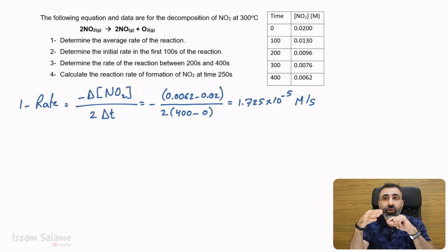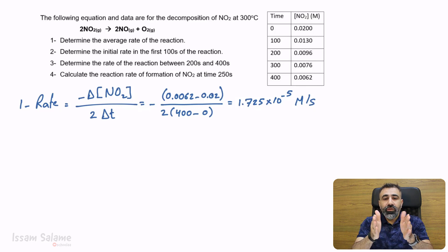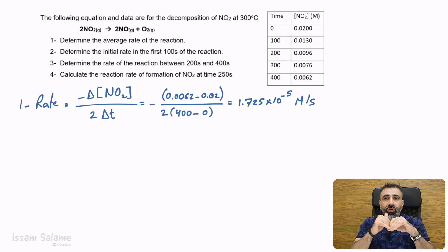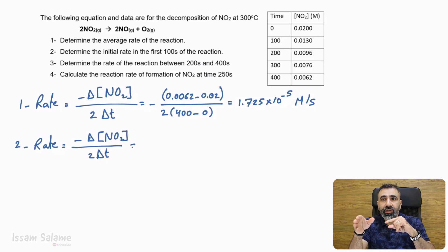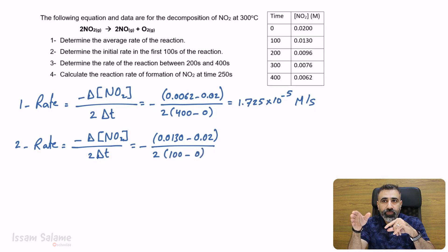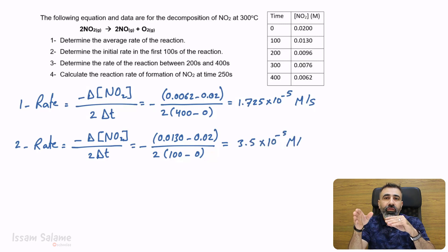For the second part, determine the initial rate in the first 100 seconds of the reaction. This means we need the final concentration at time equal to 100, and the initial concentration at time equal to zero. We write the rate law: rate equals negative delta concentration of NO2 over 2 delta T. We replace the concentrations: 0.0130 minus 0.02 divided by 2 into (100 minus 0). The answer is 3.5 times 10 to the power negative 5 molar per second.